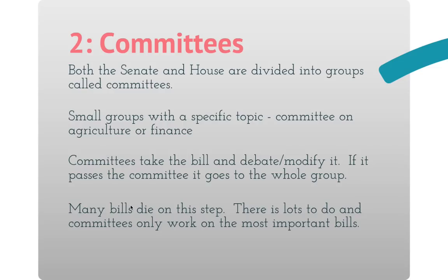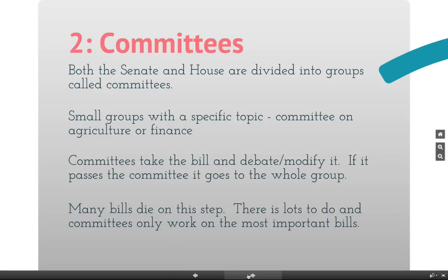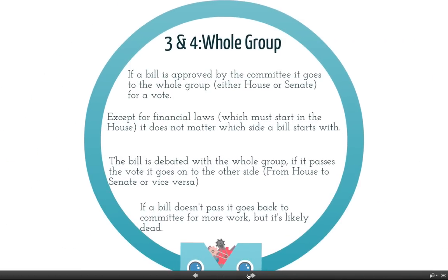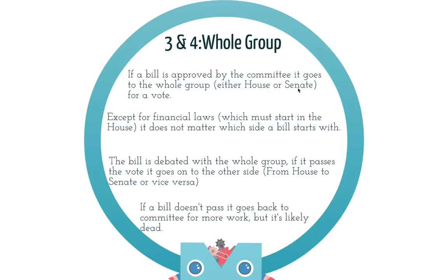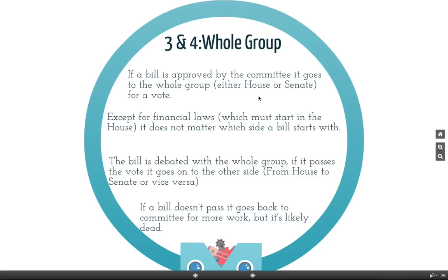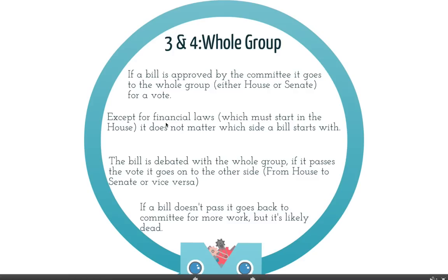If a committee likes the bill and approves it, it goes to step three: the whole group. This is where it gets a bit confusing because there are two parts of Congress — the Senate and the House — and this step applies to either one. A bill can start in the Senate and go to the House, or start in the House and go to the Senate. The only exception is financial laws, which have to start in the House. Other than that, anything can start on either side.